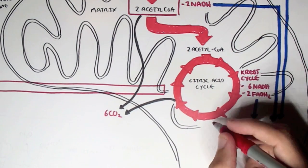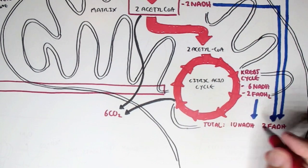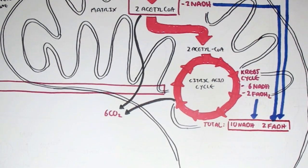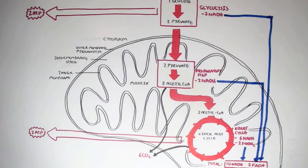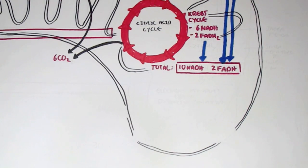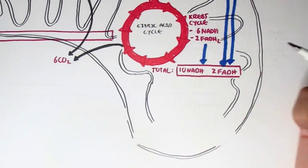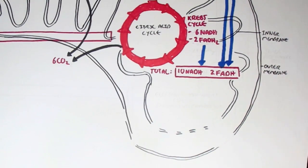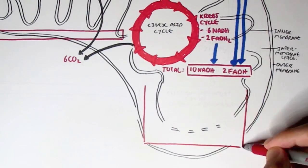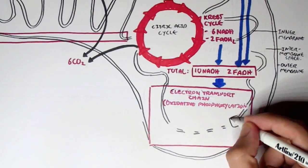The electron transport chain is within the inner mitochondrial membrane. Oxidative phosphorylation occurs in the inner mitochondrial membrane, and so the two NADHs from glycolysis have to come inside the mitochondria. The total amount of NADHs and FADH2s from glycolysis, the preparatory step, and the citric acid cycle is 10 NADHs and two FADH2s. In the mitochondria we have two membranes — the outer membrane and the inner membrane — and in between we have the intermembrane space. The electron transport chain occurs within the inner membrane, as well as the intermembrane space and the matrix.